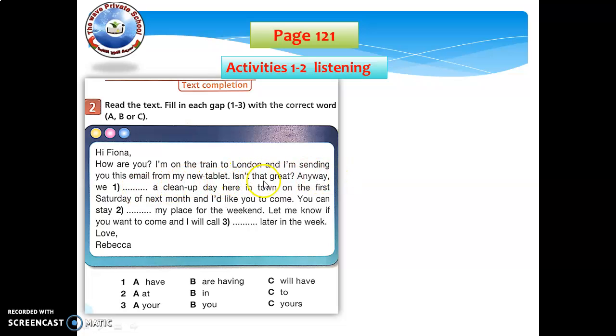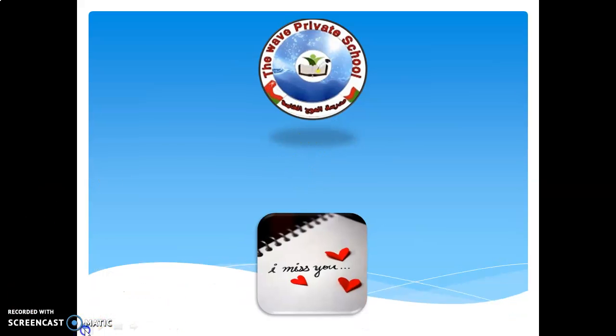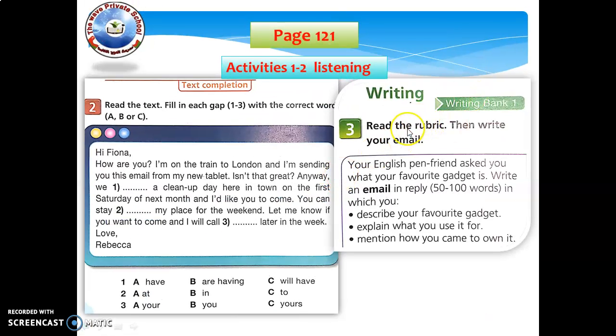So, hi Fiona, how are you? I'm on the train to London and I'm sending you this email from my new tablet. Isn't that great? Anyway, we are having a clean-up day here in town on the first Saturday of next month, and I'd like you to come. You can stay at, A, my place for the weekend. Let me know if you want to come and I will call you later in the week. Love, Rebecca. And then activity 3 on the next page. Sorry about that. So here, the writing task is: read the rubric. Then write your email. This one here: your English pen friend asked you what your favorite gadget is. Write an email in reply, 50 to 100 words.